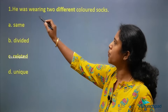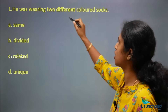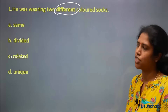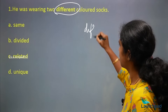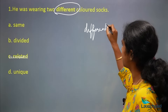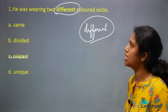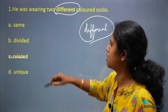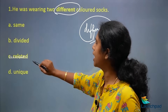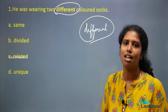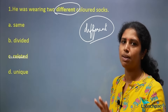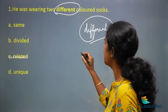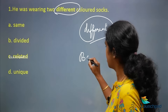So the sentence is: 'He was wearing two different colored socks.' The word we have here is 'different.' Previously we saw what 'different' means. The four options are: same, divided, related, unique. It's a very simple question. Every question paper has different levels of questions being asked. You can see that it ranges from basic,